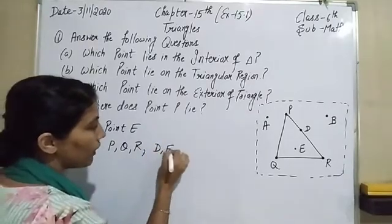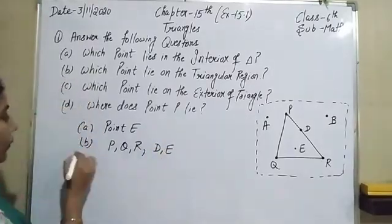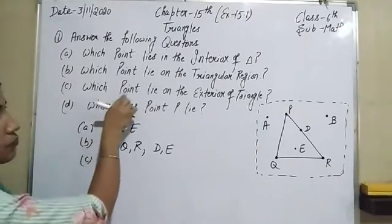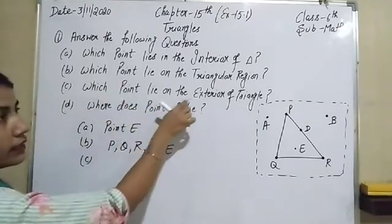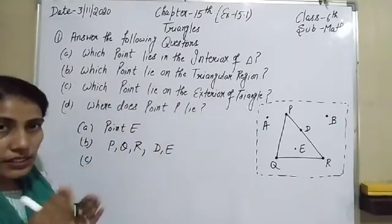Now in part C, which point lies on the exterior of the triangle? Exterior of triangle means which point lies outside the triangle.